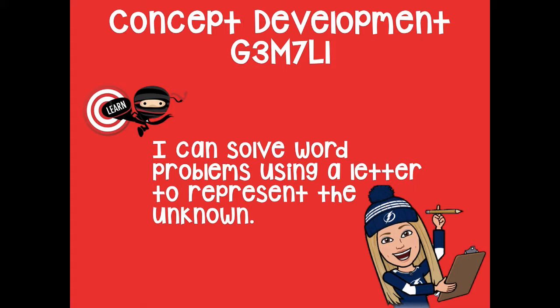When they're saying 'unknown,' that's just the missing piece of information that you have to solve for in the problem. So let's say 2 plus 4 equals the unknown — because I don't know what 2 plus 4 equals. Well, 2 plus 4 equals 6, so 6 is the unknown. The unknown is just the piece of information you're finding and solving for in the problem.